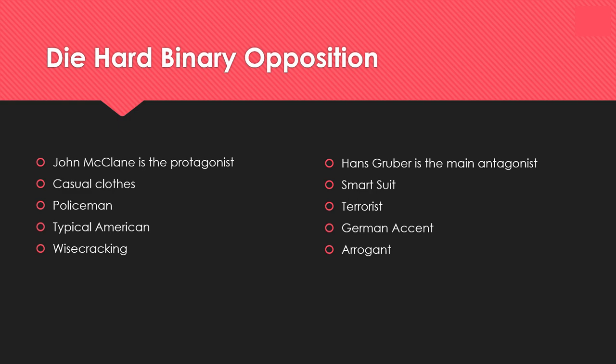We can also talk about binary opposition in Die Hard because there are two clear distinct characters. John McClane is the protagonist — he wears casual clothes, he's a policeman, he's a typical wisecracking American of the time, and you can tell he's the good guy. Hans Gruber is the main antagonist — he wears a smart dark suit, he's a terrorist with a German accent, and in the 80s there was still quite a lot of hatred towards Germany after the war. He's very arrogant in his behaviour. So those are two clear characters on both sides, making binary opposition.